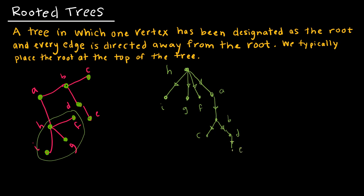D branches down into E. This is one way to make the given tree into a rooted tree. I could have chosen really any of those vertices; I just chose one that looks a bit more complicated. So I've taken the root, stuck it at the top, and everything flows away from there.